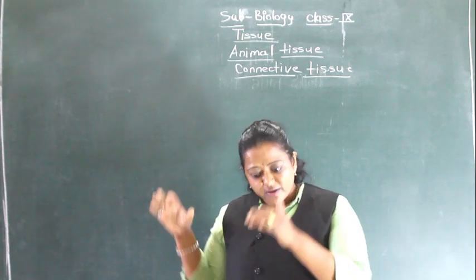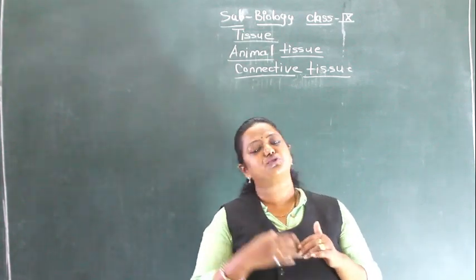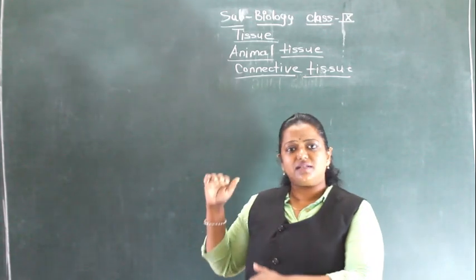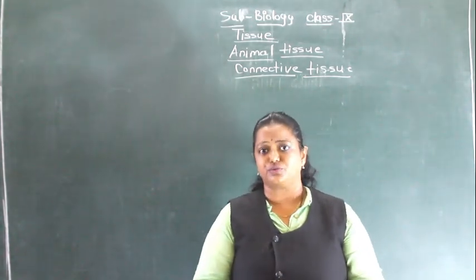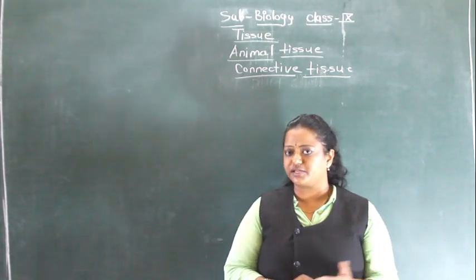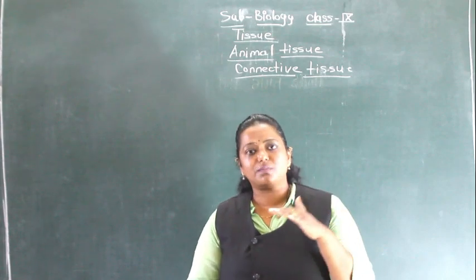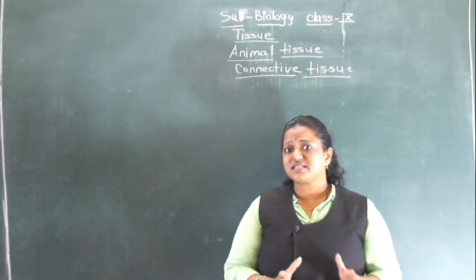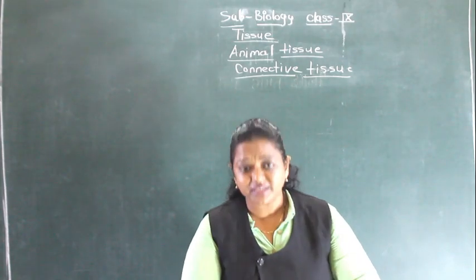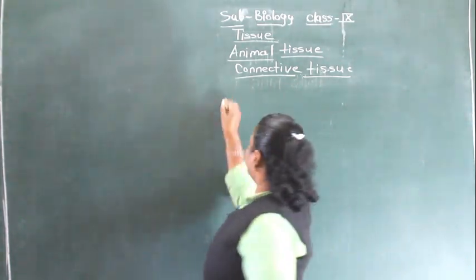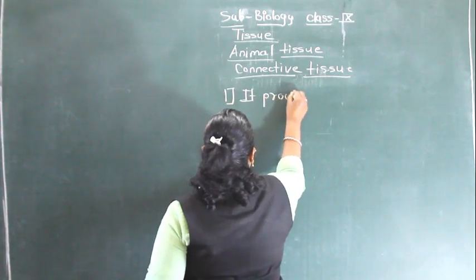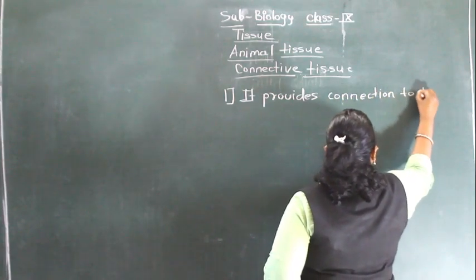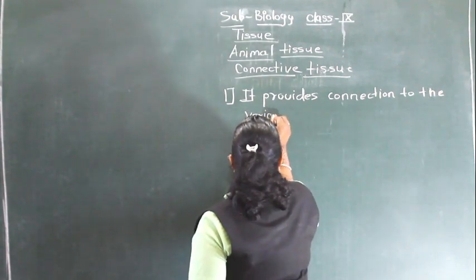There are various types of connective tissue, and these are some common characteristics of connective tissue — just as we have seen common characteristics for epithelial tissue and muscular tissue. The first common characteristic of connective tissue is that it provides connection to the various organs of our body.